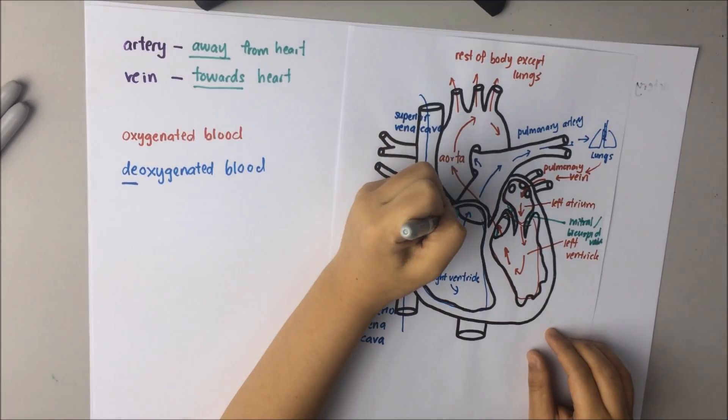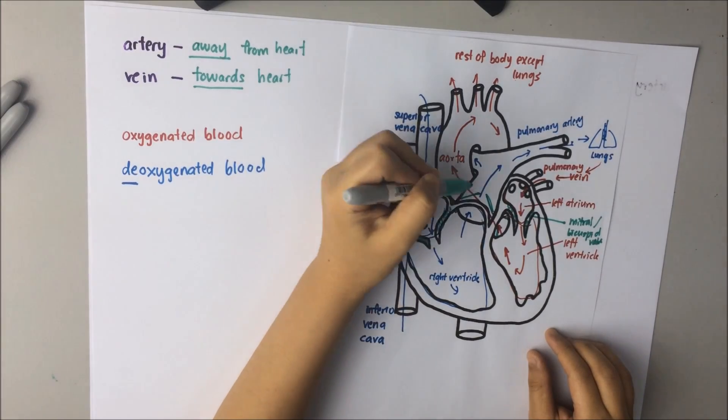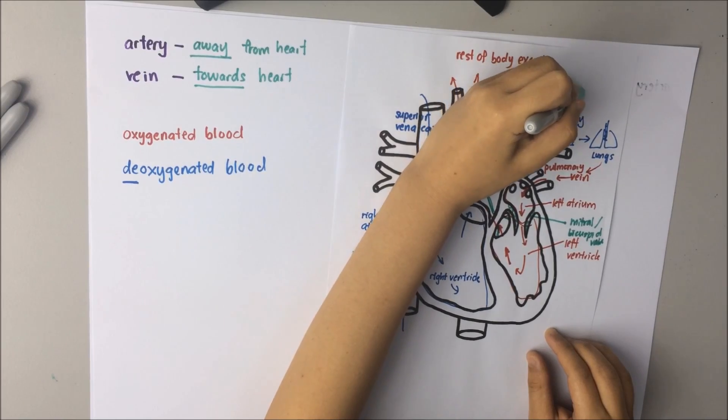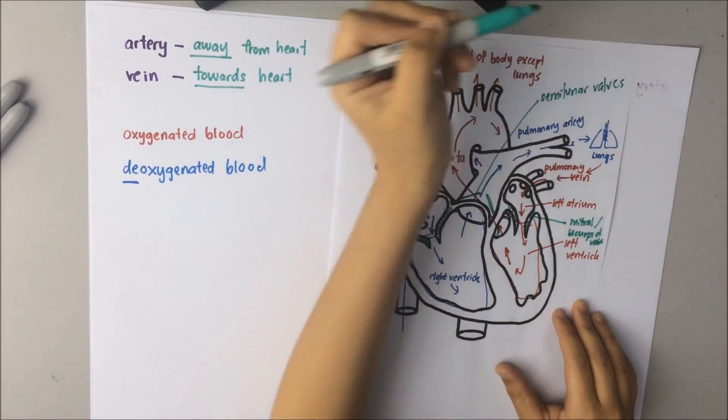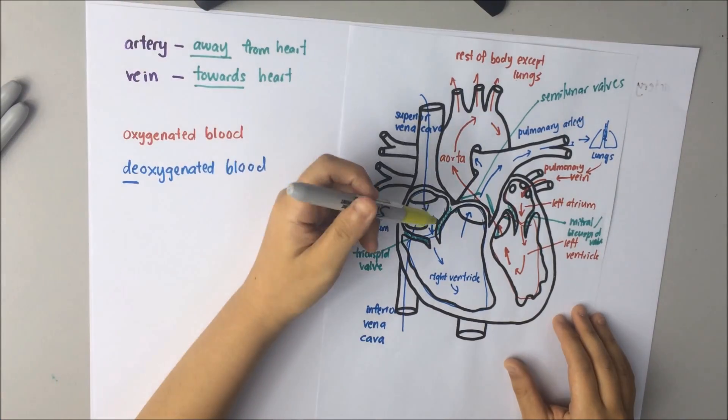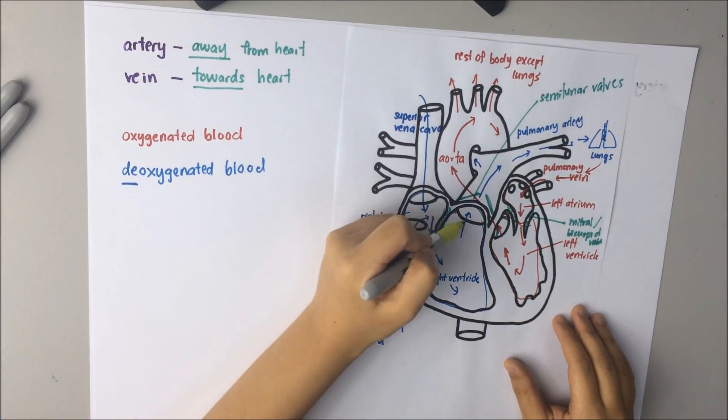While the semilunar valves prevent the blood flow back into the ventricles when the ventricle relaxes.